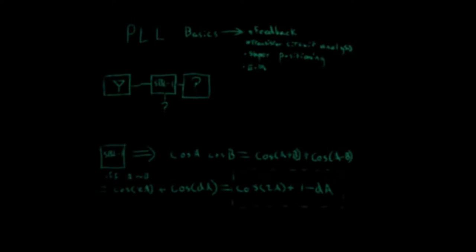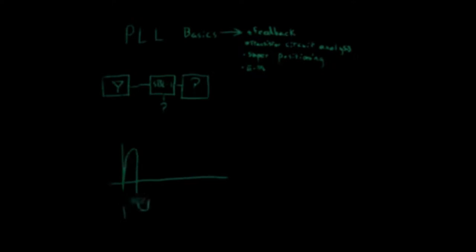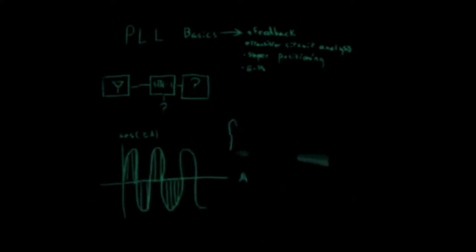The next component that we place into the circuit is called an integrator, often called a low-pass filter. The integrator has two main properties. The integrator will block nearly all high-frequency signals due to the capacitor and the fact that the integral of cosine A is equal to 1 over A times sine A, which, if A is large, approaches zero.